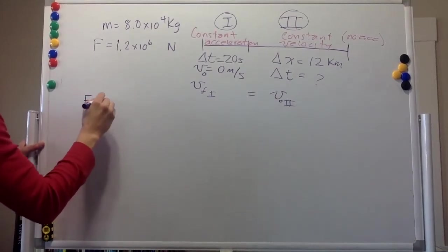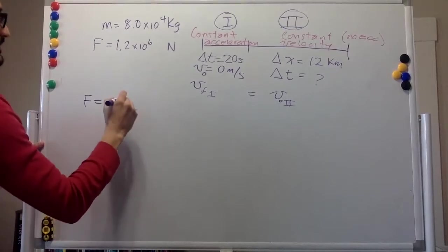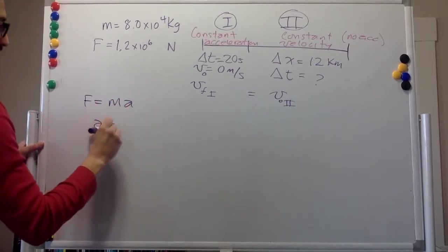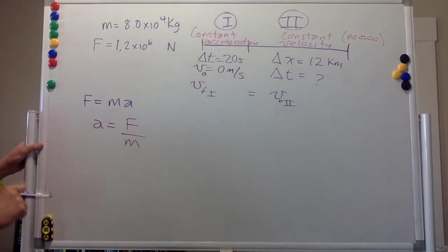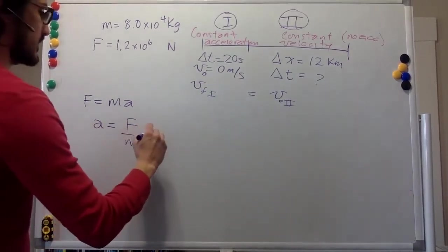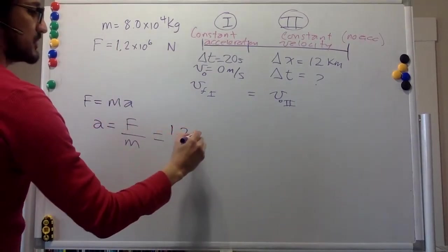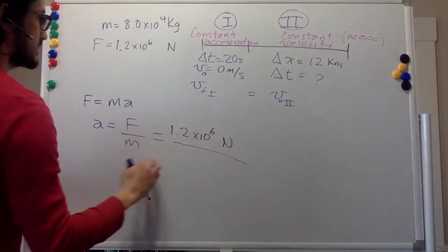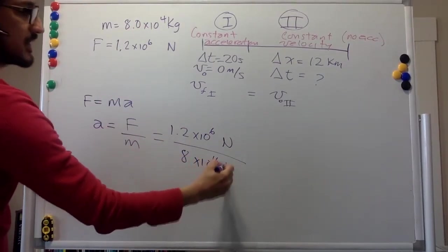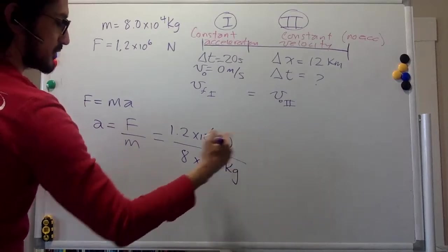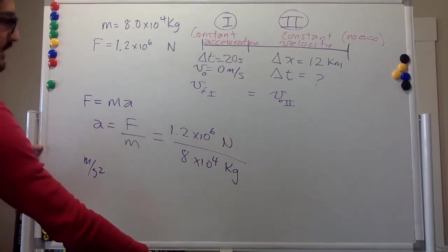So remember that force equals mass times acceleration. So acceleration is force divided by mass. I was getting a little bit ahead of myself there. So the force is this 1.2 times 10 to the 6 Newtons, and the mass is 8 times 10 to the 4 kilograms. So the units are going to be in meters per second squared, as we want them to be or need them to be.